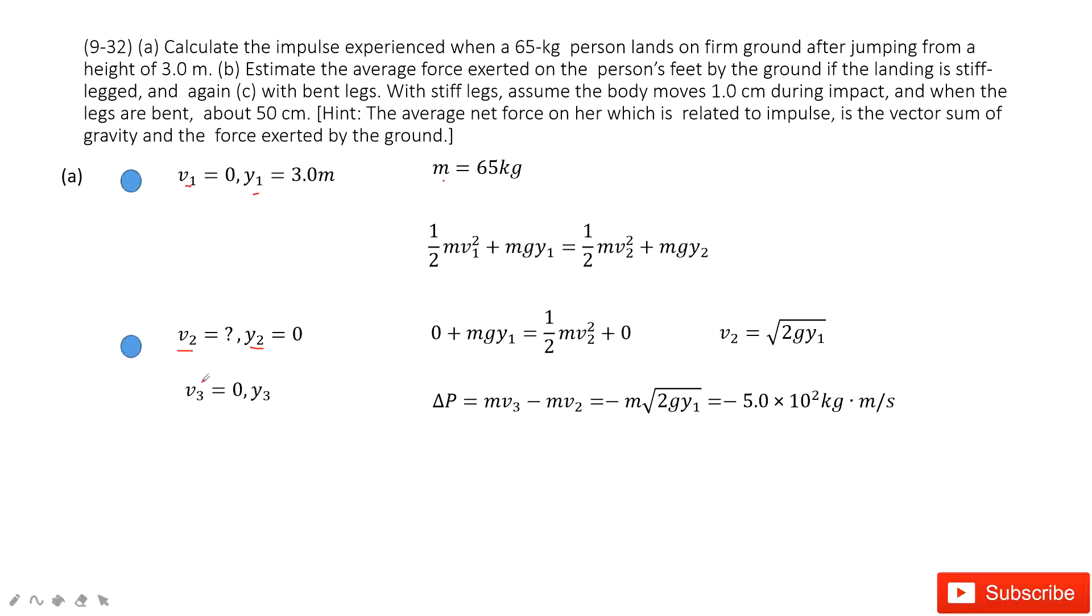And finally, this person just keeps stationary. The velocity is 0, and y3? We don't know. In this one,